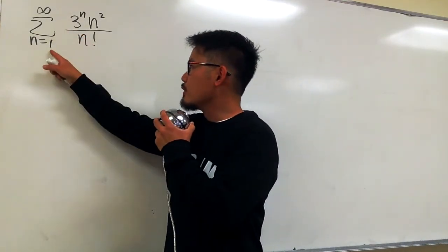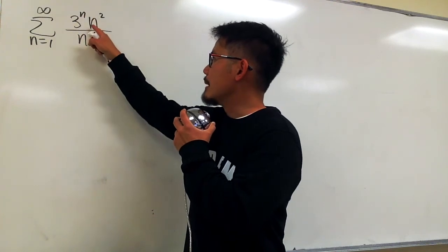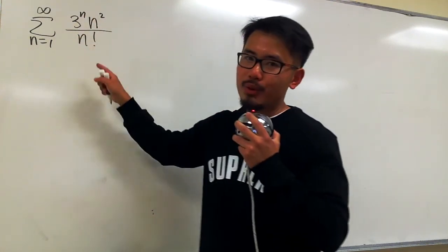Converge or diverge. We have σ when n goes from 1 to infinity, 3 to the nth power times n squared over n factorial.